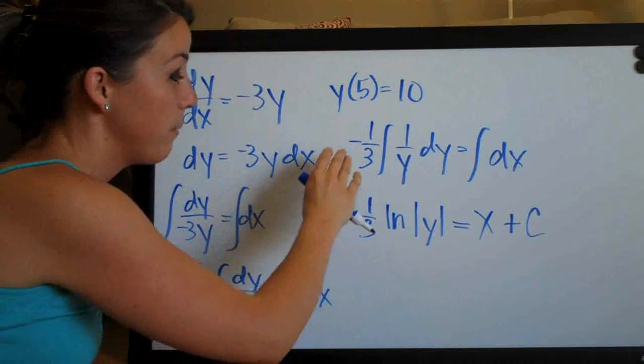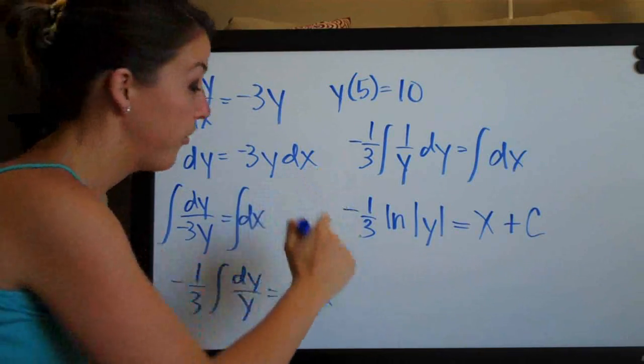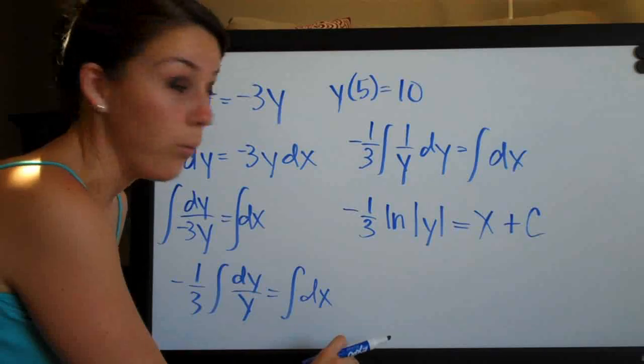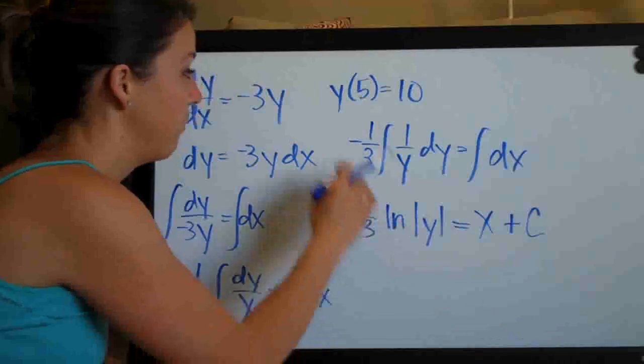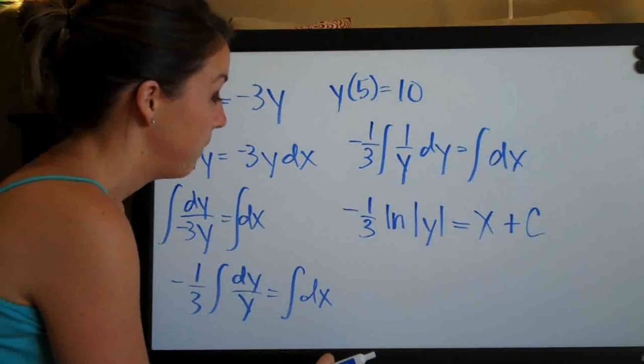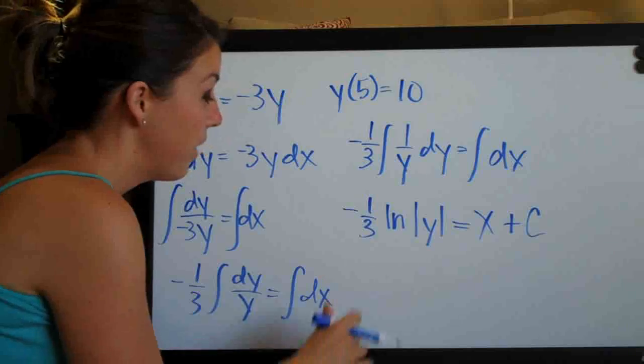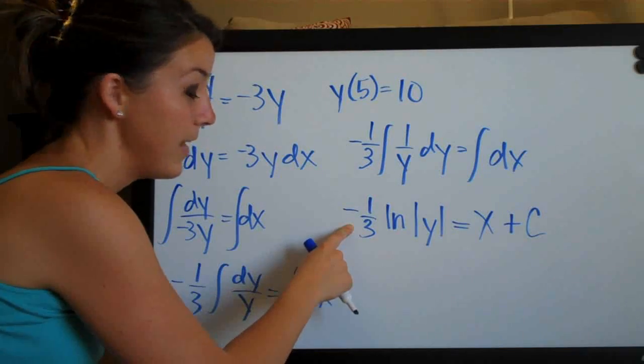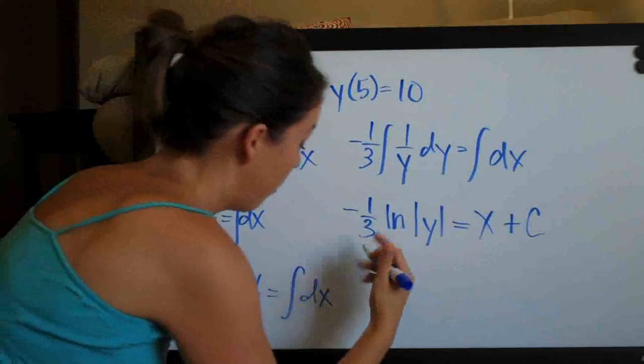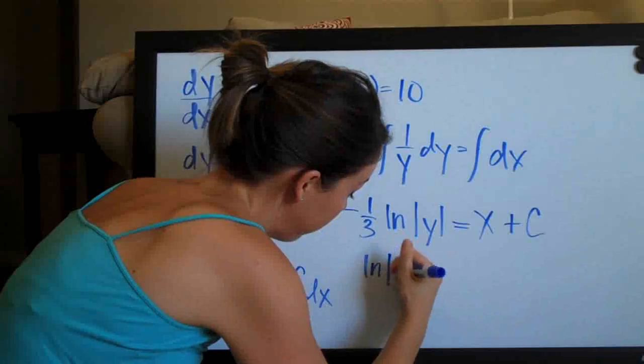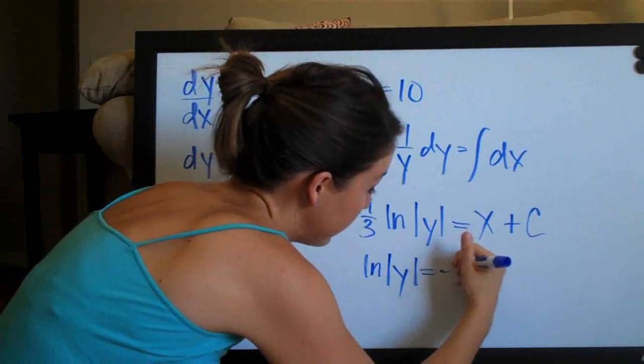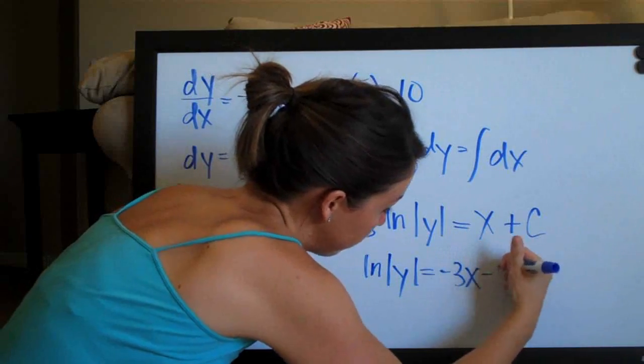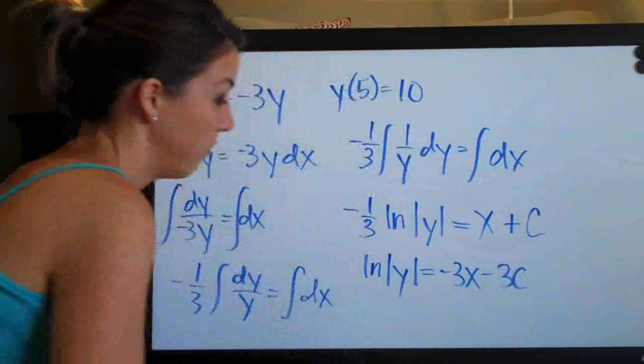After we've separated variables, integrated both sides, now what we need to do is go ahead and solve for y so that we can simplify all of this and then plug in our initial condition. So to solve for y, let's go ahead and multiply both sides by negative 3. That will get rid of this coefficient here. So we'll be left with natural log of the absolute value of y equals negative 3x minus 3c. I'll just go ahead and distribute that.